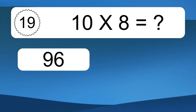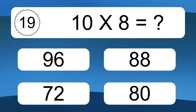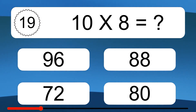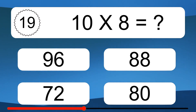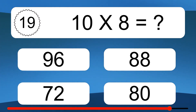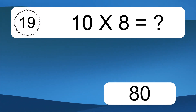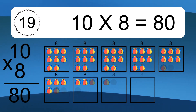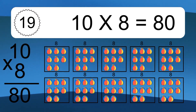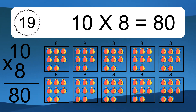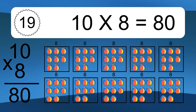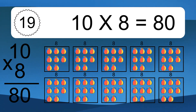Ten times eight equals what? Ten times eight equals 80. We have 10 boxes, and each box has 8 colorful balls inside. If you count all the balls in all the boxes together, you will have 10 times 8 balls. This equals 80 balls.